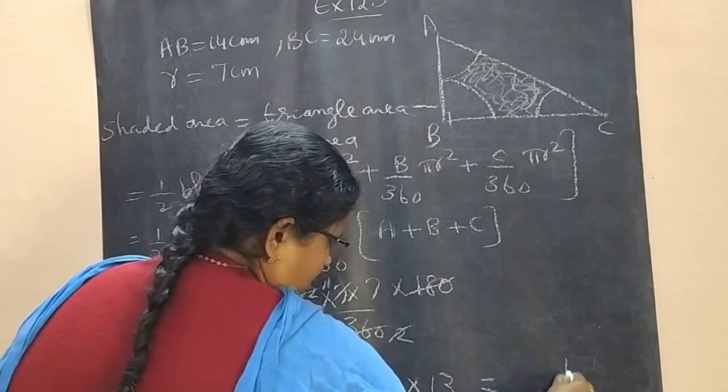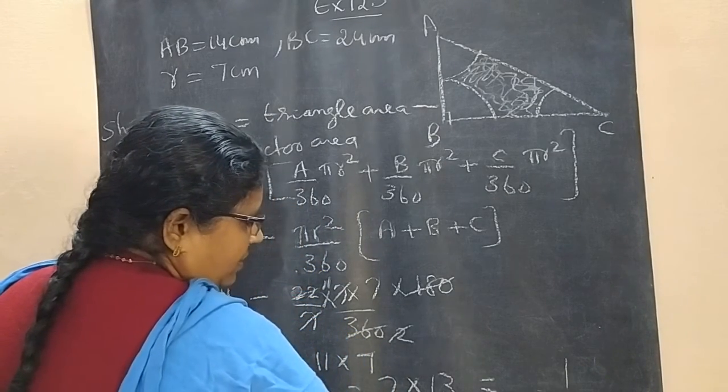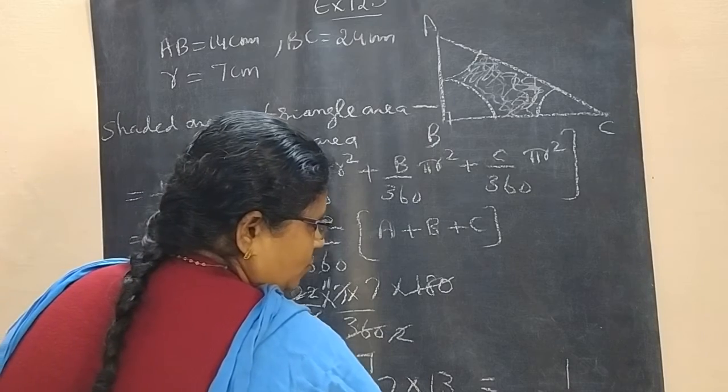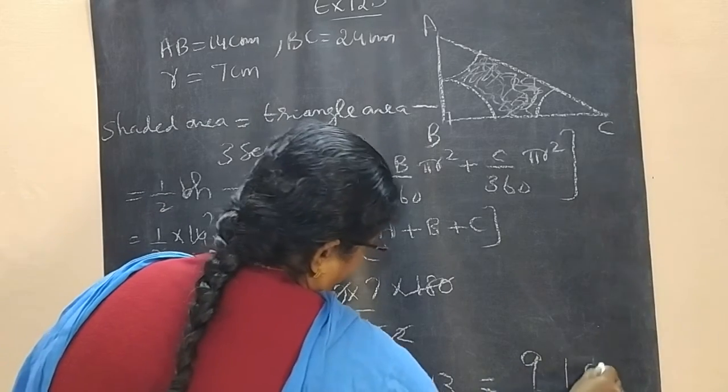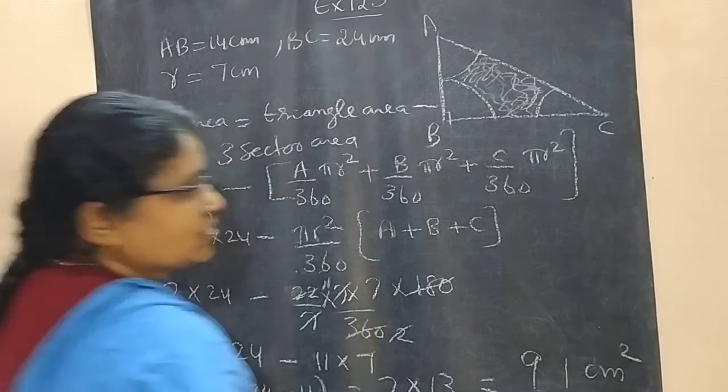What is 13 into 7? 7 times 3 is 21, 7 plus 21 is 91.